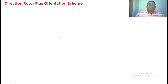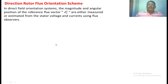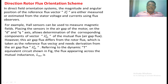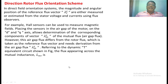In case of direct rotor flux orientation control, we measure the rotor flux by placing Hall effect sensors in the stator. These Hall effect sensors are kept on the DQ axis in the stator and measure the rotor air gap flux. By means of the air gap flux, we can derive the rotor flux, which is taken as input to the control system.